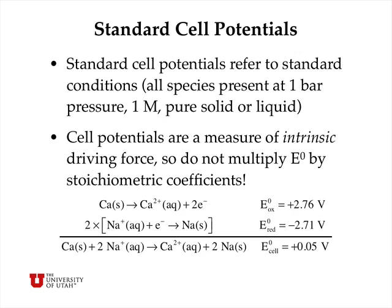For example, if I react calcium as an oxidation, I get the same oxidation potential as in the last slide, 2.76 volts. And now if my reduction reaction involves sodium, I actually need to multiply the sodium reaction by 2 in order to balance the number of electrons, and so my overall reaction has 2 moles of sodium ions being reduced to sodium metal. But the reduction potential, I write as a straight minus 2.71 volts without multiplying that by 2, and so when I add the oxidation and reduction potentials, I get an overall cell potential which is plus 0.05 volts.